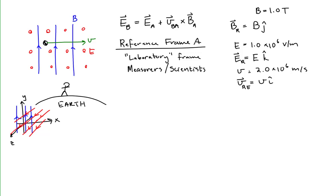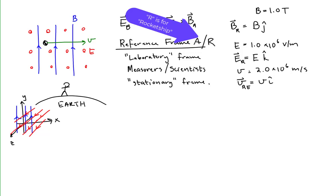Typically these measurers are considered to be stationary with respect to what they are measuring, so this is the stationary frame. This can get confusing because the stationary frame may be moving relative to another reference frame, but what's really important is whether this is the frame for which we have measurements. For this problem, the rocket ship is the laboratory frame because the rocket ship has measurements for the electric field and the magnetic field — so I'll add subscript R for this reference frame.